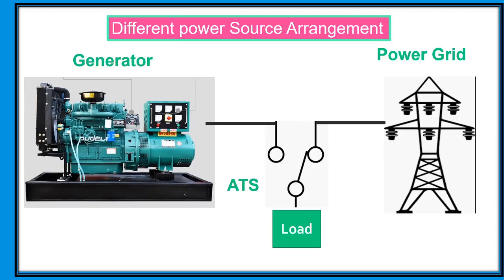There are a variety of arrangements available in utilizing two power sources in automatic transfer switches. The first one is utility grid to generator source. The usual transfer switch arrangement comprises an electrical utility service and a generator for normal and emergency power sources. This system arrangement is typically referred to as an emergency standby generator system.